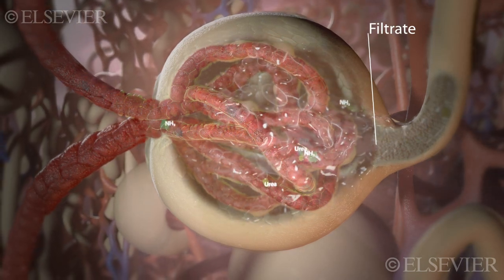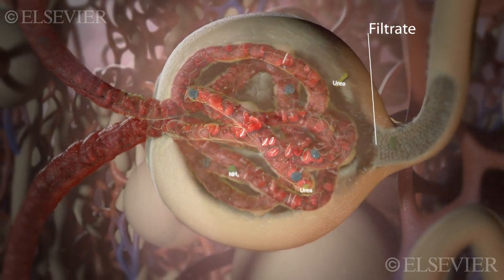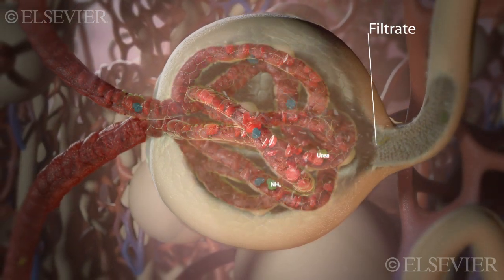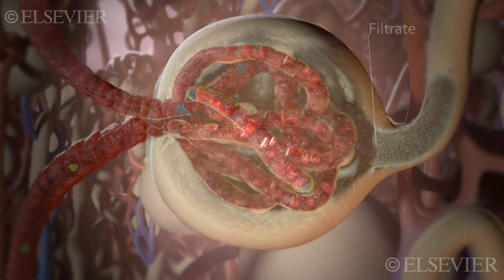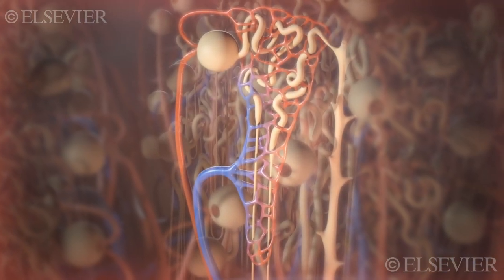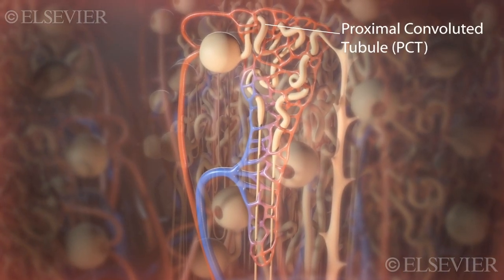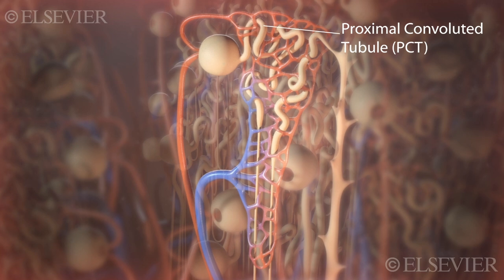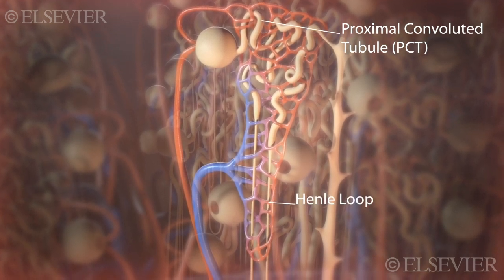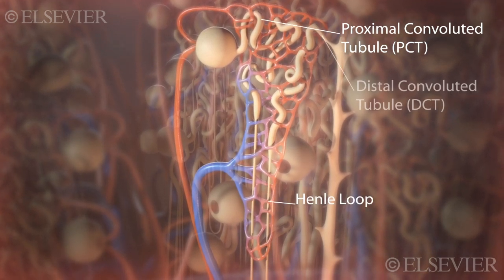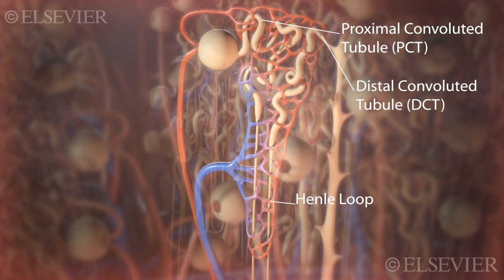Proteins in blood cells are too large to be filtered through the wall of the glomerular capillaries, so they remain in the blood. The filtrate travels through the proximal convoluted tubule, or PCT, the loop of Henle, and the distal convoluted tubule, or DCT.